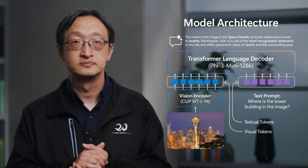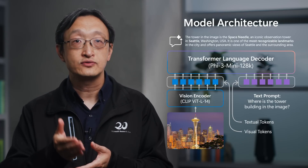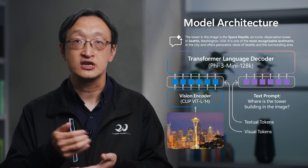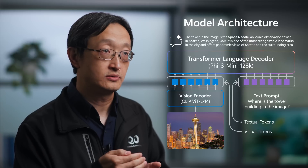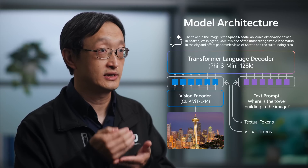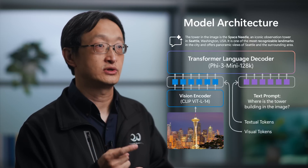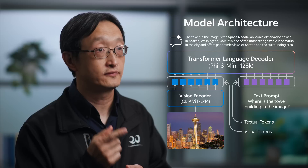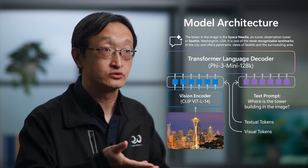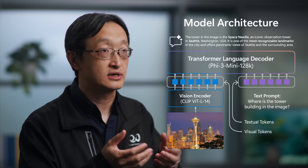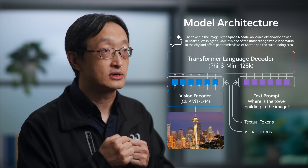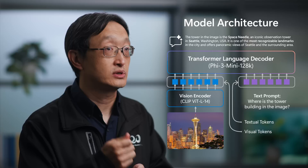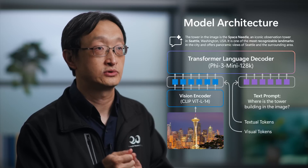Here is how the model works. Phi-3 Vision is a vision language model designed to process an image and a text prompt as inputs, and generate text outputs. The model is composed of two primary components: a vision encoder and a language decoder. The vision encoder, which is based on the CLIP vision transformer model, extracts visual tokens from an input image. These visual tokens are concatenated with text tokens and fed to the transformer language decoder, which is based on the Phi-3 Mini 128k model, to generate output text.